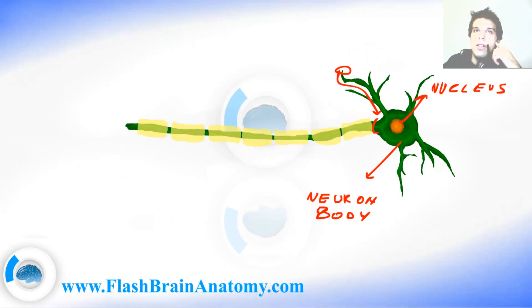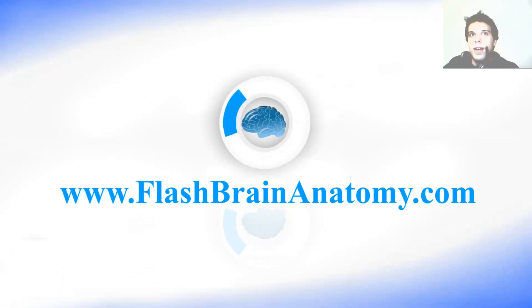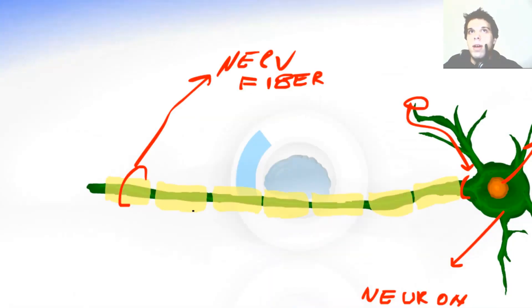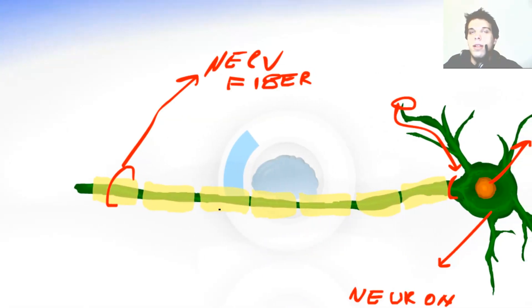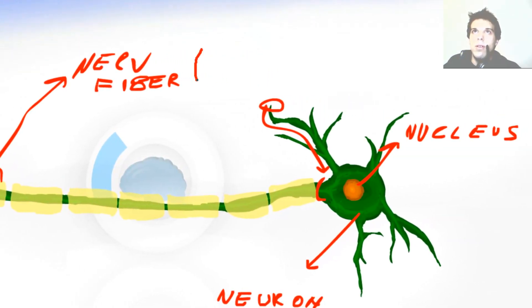Right around it there are glia cells that protect it, and all together it is called the nerve fiber. Now, the nerve fiber is glia plus axon.